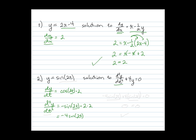Now again, we substitute in. Our second derivative is negative 4 sine of 2t plus 4 times what y was, which is sine of 2t,